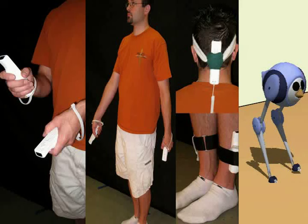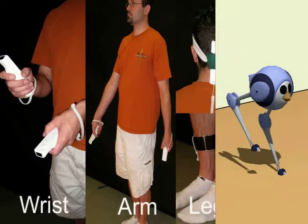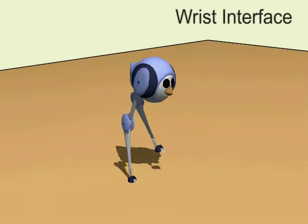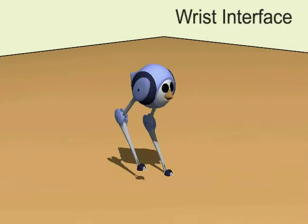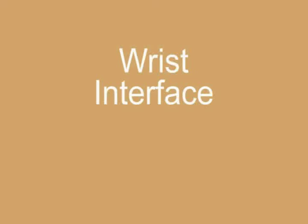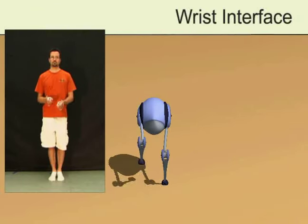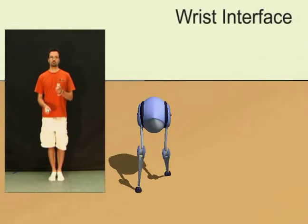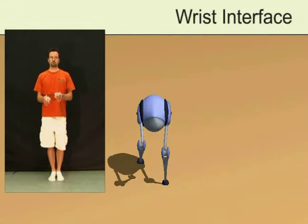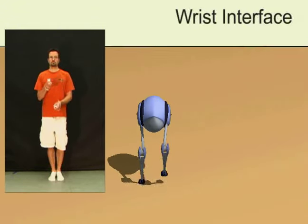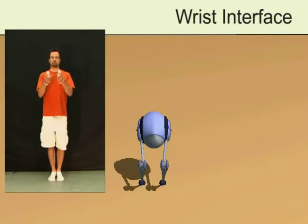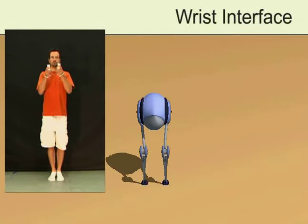In this paper, we explore three different interfaces for using a set of Wiimotes to control a dynamically simulated character. This first interface uses the motion of the wrists to specify walking, running, and jumping. Walking is commanded with a smaller motion with the wrists moving out of phase. Running is specified with a faster motion with the wrists also moving out of phase. Jumping requires the wrists to move in phase.